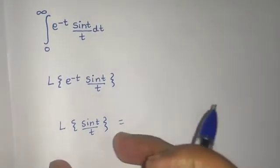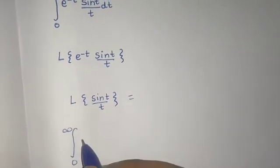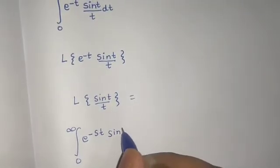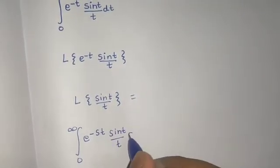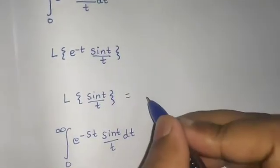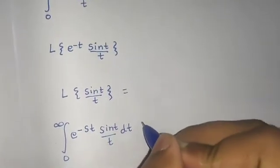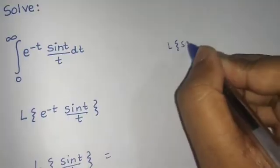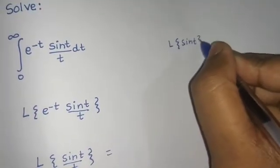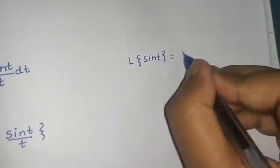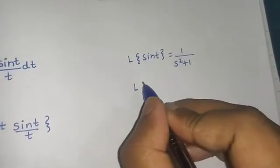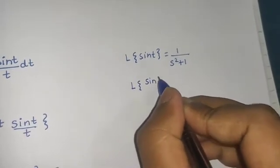On the LHS we use the definition, which gives us the integral from 0 to infinity of e^(-st) times f(t) dt. On the RHS we can use the formula. First calculate Laplace of sin(t), which is a divided by s² plus a². Here a is 1, so it's 1 divided by s² plus 1. Now we will use the formula for division by t.